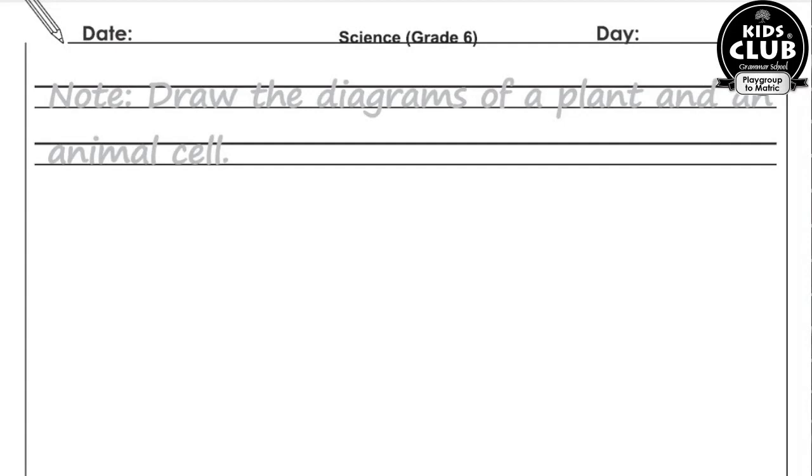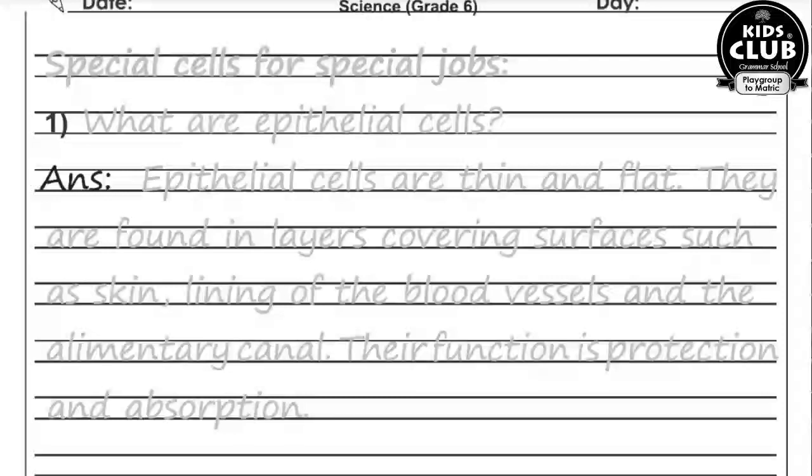Draw the diagrams of plant and animal cell from the science book. Special Cells and Special Jobs — Question number one: What are epithelial cells? Epithelial cells are thin and flat. They are found in layers covering surfaces such as skin, lining of blood vessels, and the alimentary canal. Their function is protection and absorption.